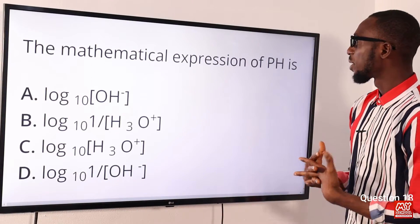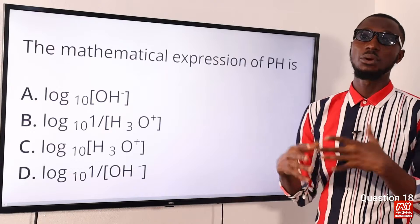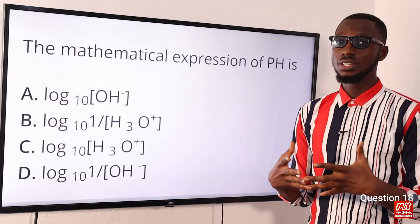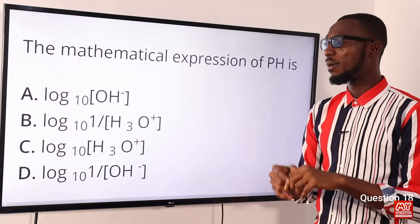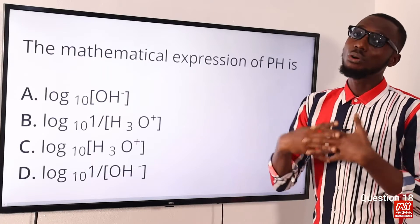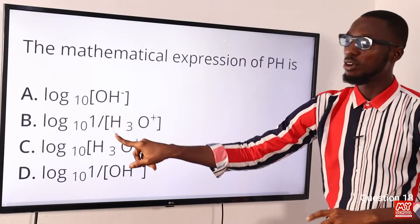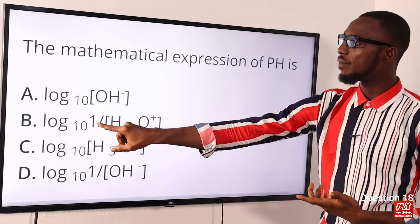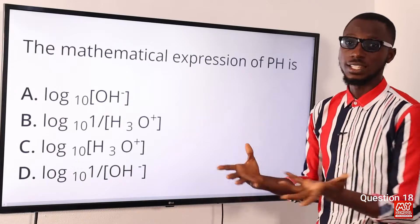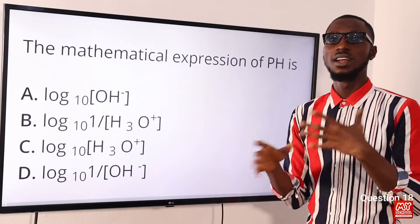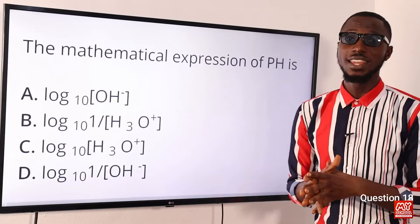Question 18: The mathematical expression of pH is what? pH equals minus log base 10 of [H⁺] — that is your hydrogen ion — or you can use the hydronium ion: pH equals minus log base 10 of [H₃O⁺]. Alternatively, pH equals log base 10 of 1 over [H⁺]. Once you have the 1-over form, you won't have the minus beside it. These are all equivalent expressions. The correct option is option B: log base 10 of 1 over [H⁺].